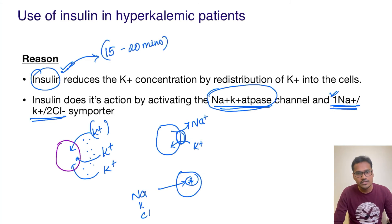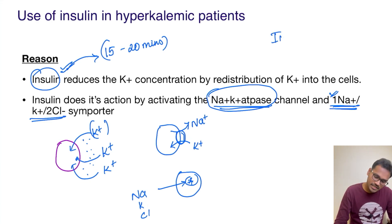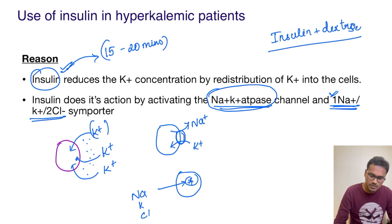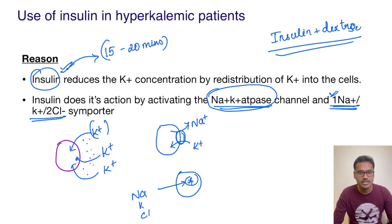This is a wonderful treatment that can save hyperkalemic patients. One important caution: insulin can cause hypoglycemia, so it is ideally always given with a dextrose solution. Insulin plus dextrose is a well-established treatment given to hyperkalemic patients. I hope that's clear — thank you for listening, and we'll see you in the next video.